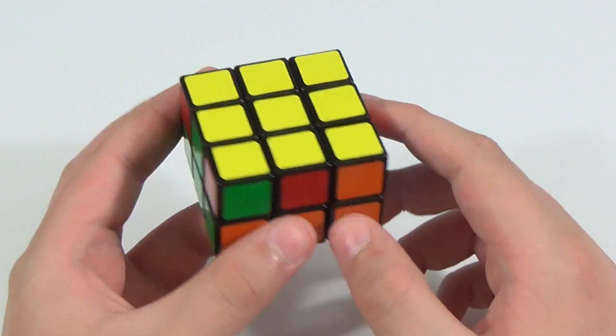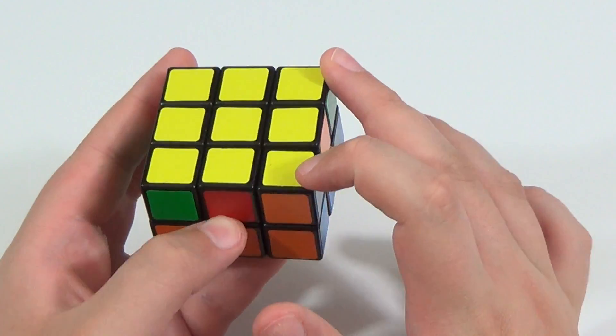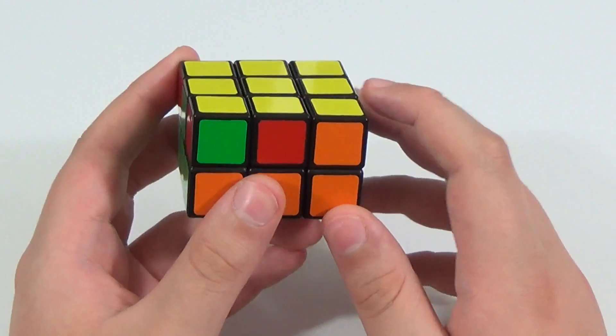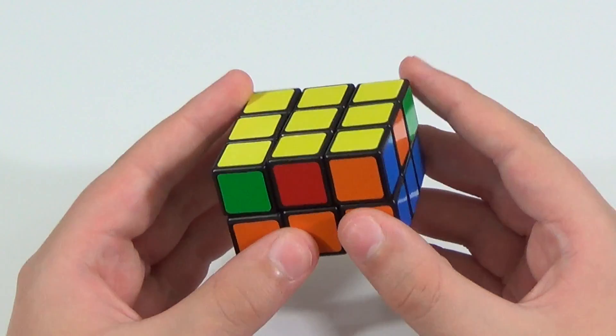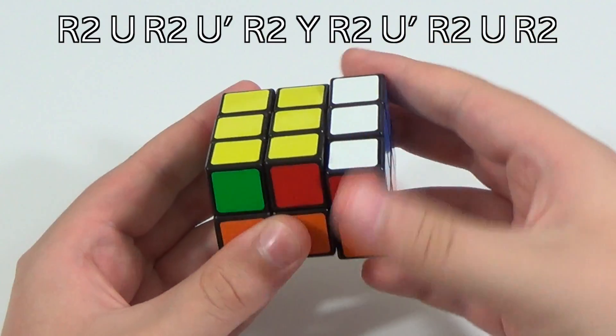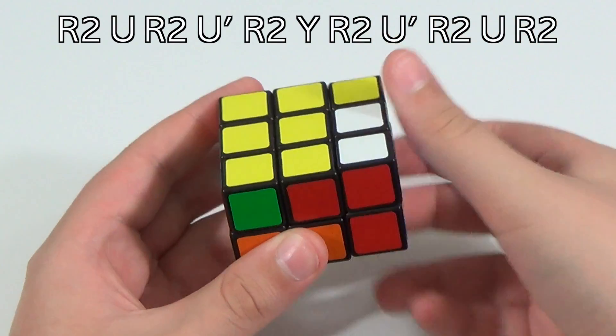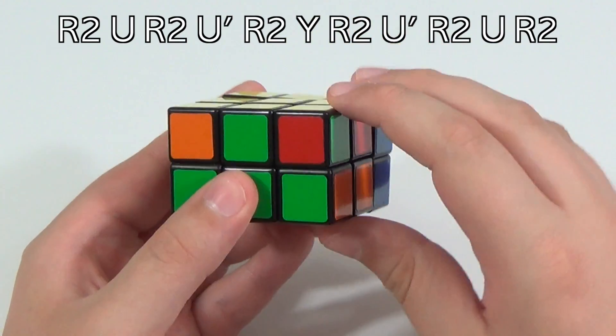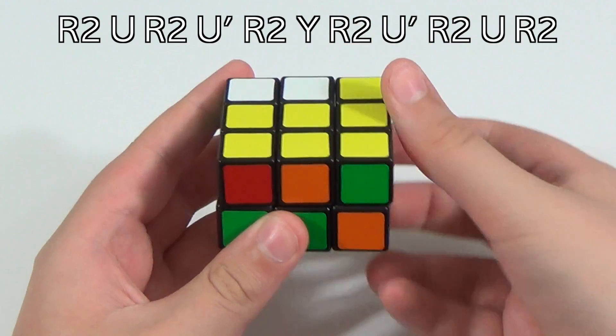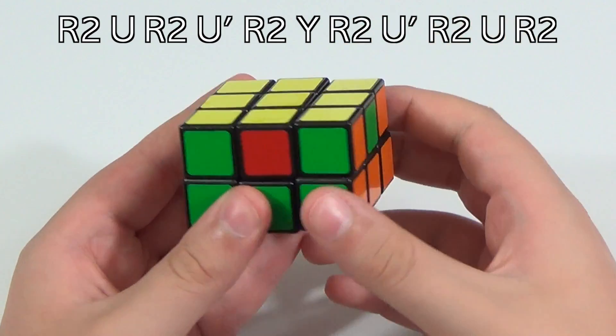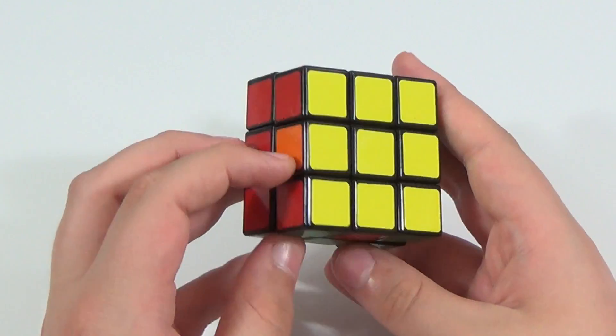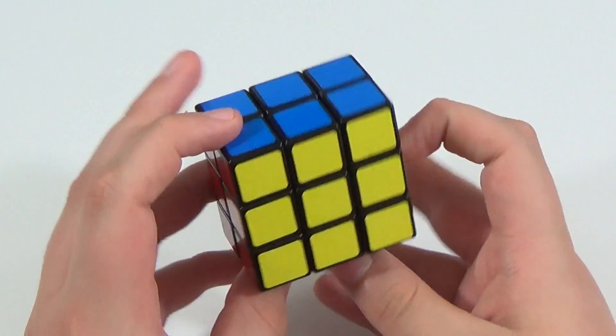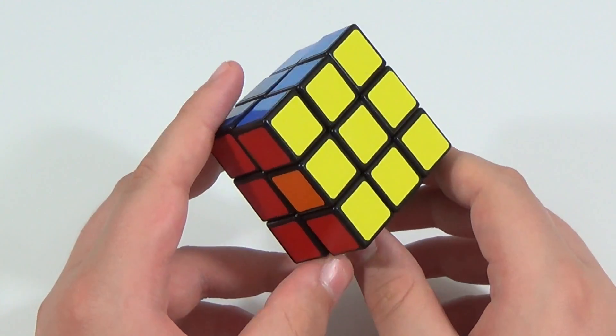So this corner permutation algorithm we're going to be doing switches two adjacent corners and two opposite edges, sort of like a t perm but the edges don't matter right now. So with headlights on the left, perform this algorithm: r2, u, r2, u prime, r2, then turn the cube to the left, or a y rotation, and then do r2, u prime, r2, u, r2. So basically the corner insertion algorithm, and then a y, and then the reverse of that. So now as you can see, all of the top layer corners are solved.